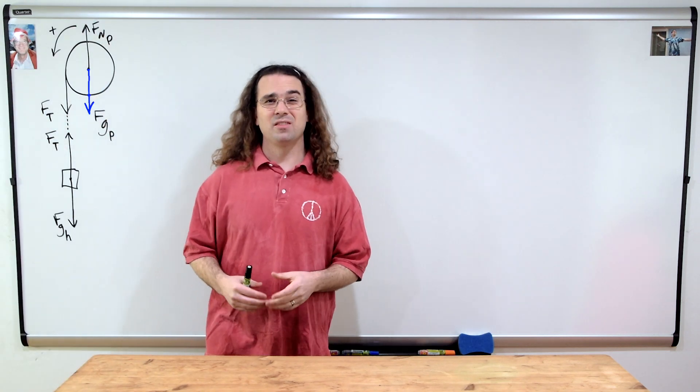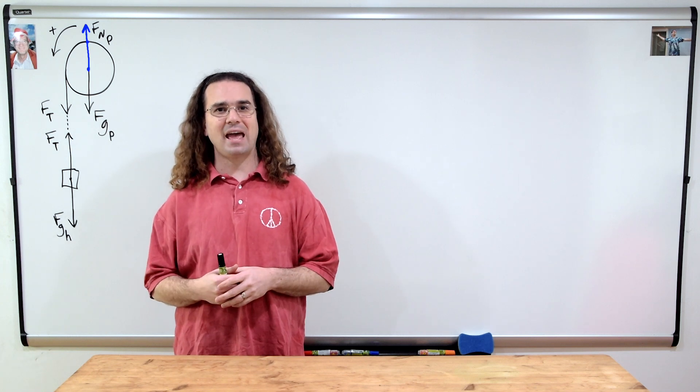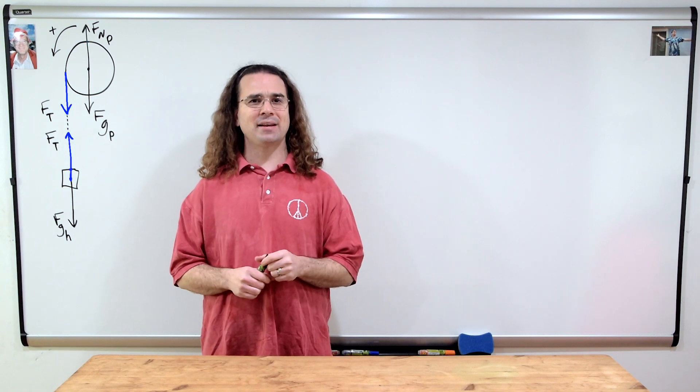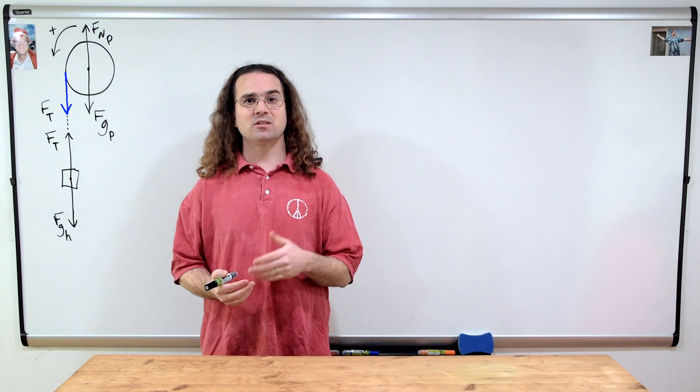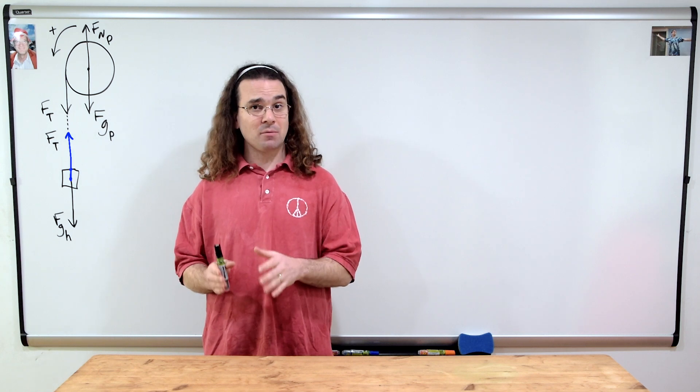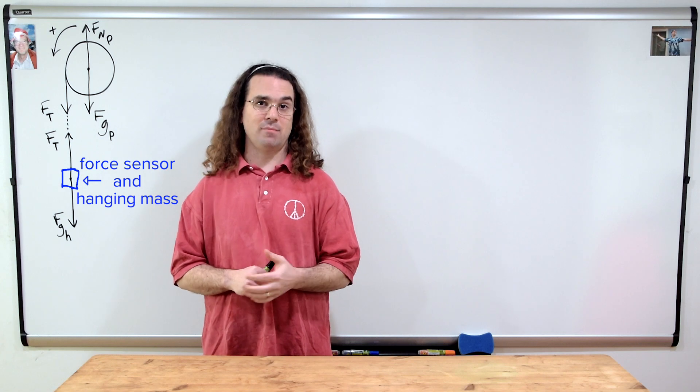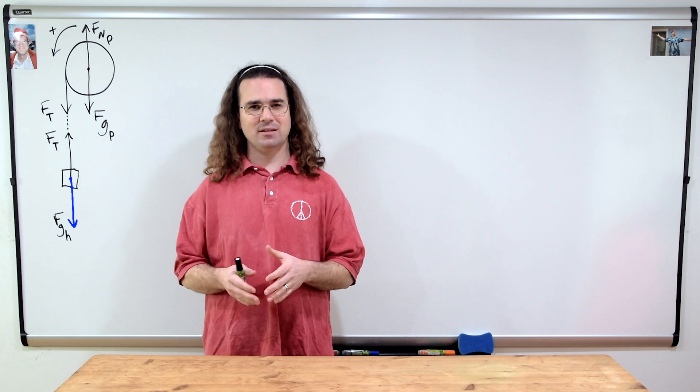The force of gravity on the pulley acts down at its center, which is also the location where the upward normal force acts on the pulley. On both ends of the string are two equal magnitude forces of tension. One acts down on the pulley, the other acts up on the hanging mass, and the hanging mass includes both the force sensor and the mass which is hanging from it. And there is a force of gravity acting down on the center of mass of the hanging mass.